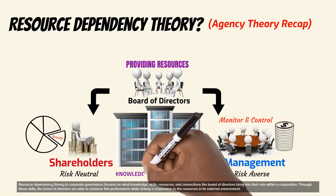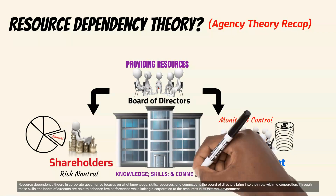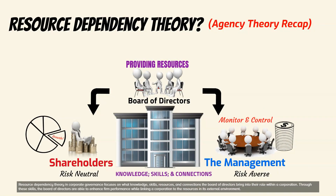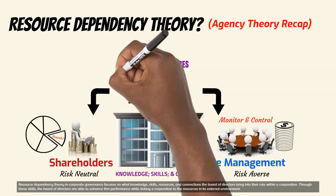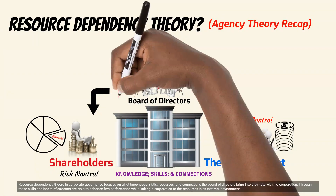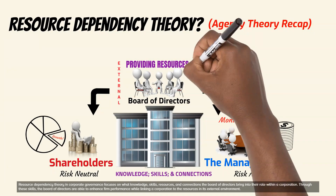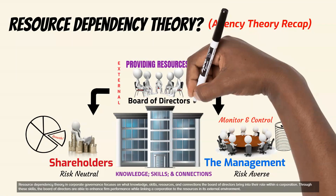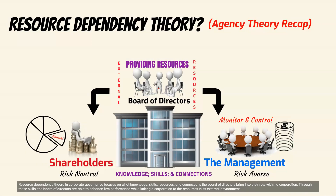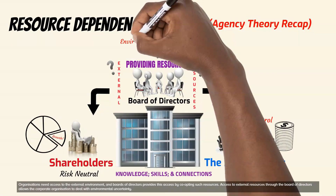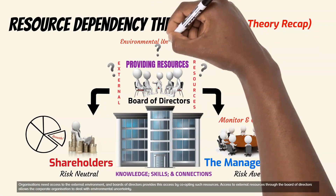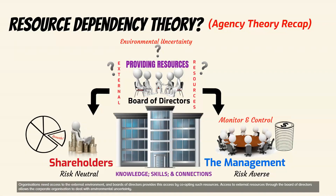Resource dependency theory in corporate governance focuses on what knowledge, skills, resources, and connections the board of directors bring into their role within a corporation. Through these skills, the board of directors are able to enhance firm performance while linking a corporation to the resources in its external environment. Organizations need access to the external environment, and boards of directors provide this access by co-opting such resources. Access to external resources through the board of directors allows the corporate organization to deal with environmental uncertainty.